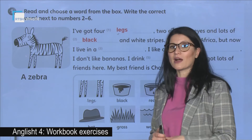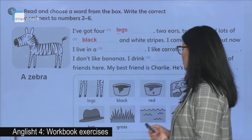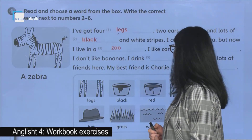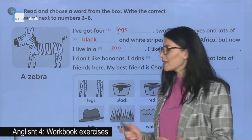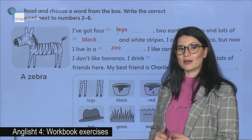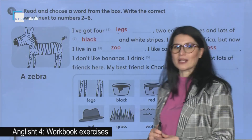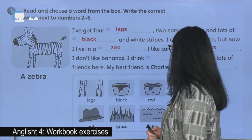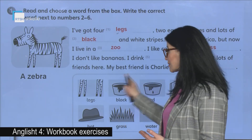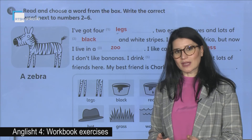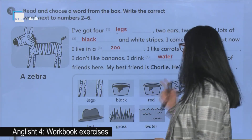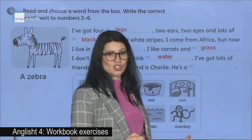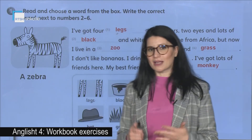Let's go on. I come from Africa, but now I live in a zoo. I like carrots and grass. I don't like bananas. I drink water. I've got lots of friends here. My best friend is Charlie. And Charlie is a monkey — the zebra's friend.